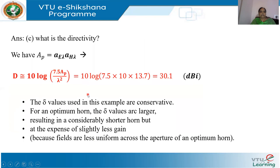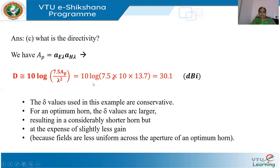The directivity is 10*log(7.5 * A_P / lambda²), assuming 60% efficiency. With A_E equal to 10 lambda and A_H equal to 13.7 lambda, we get 30.1 dBi. The delta values used were conservative — 0.2 lambda in the E plane versus the maximum 0.25 lambda, and 0.375 lambda in the H plane versus the maximum 0.4 lambda. For an optimum horn with larger delta values, you can have a shorter horn, but the gain will slightly reduce — this is the trade-off.